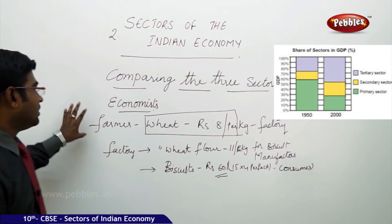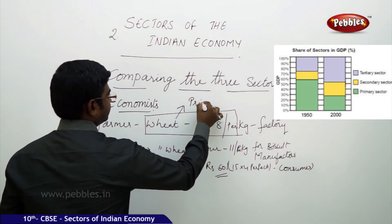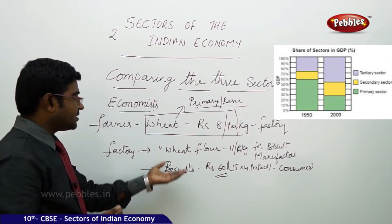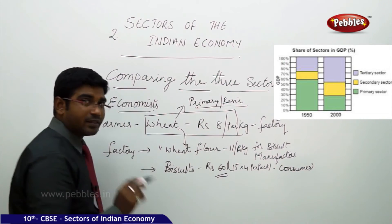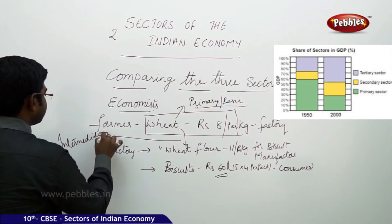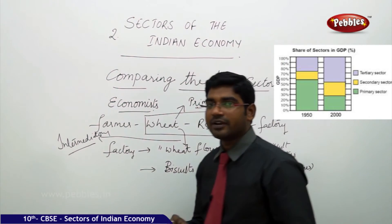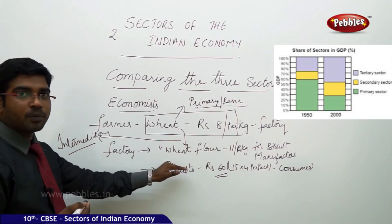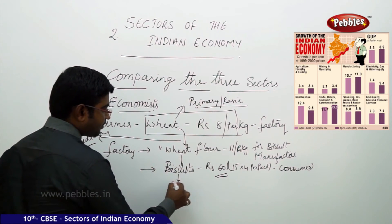What the farmer is selling is the primary product or basic product. The base for making biscuits is wheat — this is the primary product. Once the primary product is transformed from its original shape to another shape, it becomes an intermediary product. This intermediary product will definitely not be considered as a basic product. The wheat got transformed into flour, so flour is an intermediary product because it is again not the final product. From there, we got the final product — that is, biscuit.